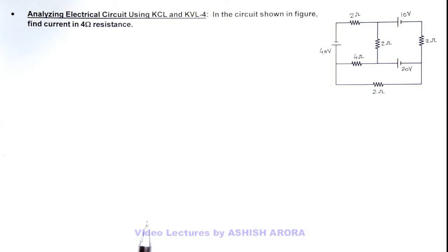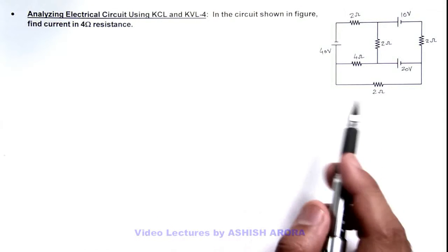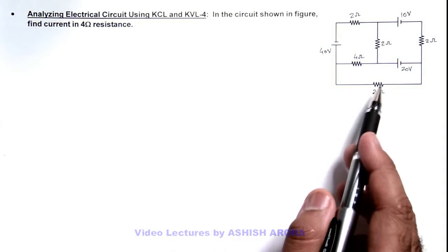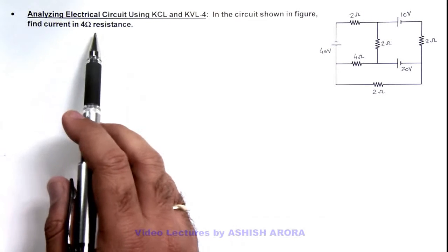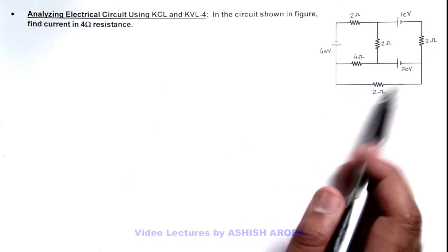In this illustration, we'll analyze another circuit using KCL and KVL. Here we are required to find the current in this 4-ohm resistance in the circuit.